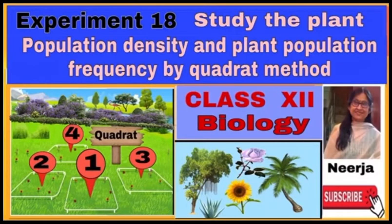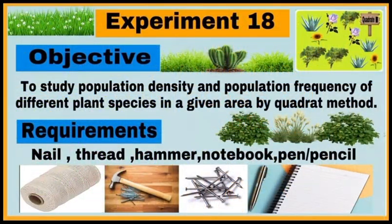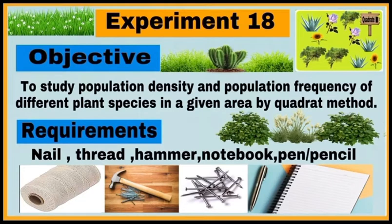Hello students, this is experiment number 18: study the plant population density and plant population frequency by quadrat method. The objective of the experiment is to study population density and population frequency of different plant species in a given area by using the quadrat method. We require nails, thread, hammer, notebook, and pen or pencil to do and to record the experiment.